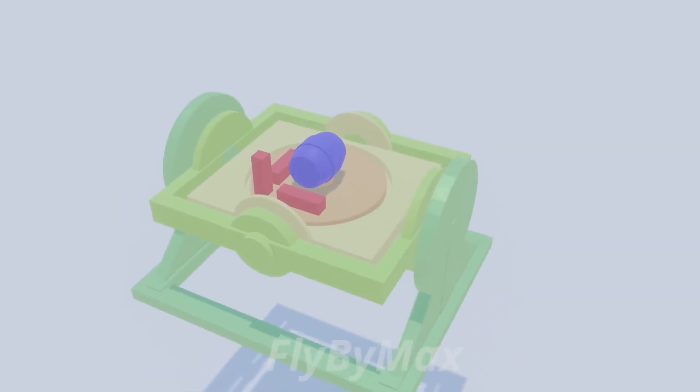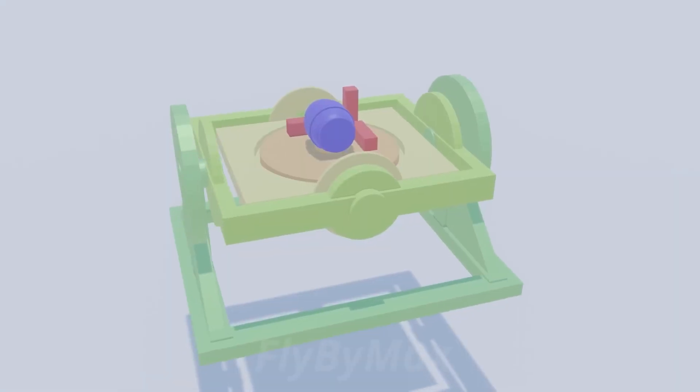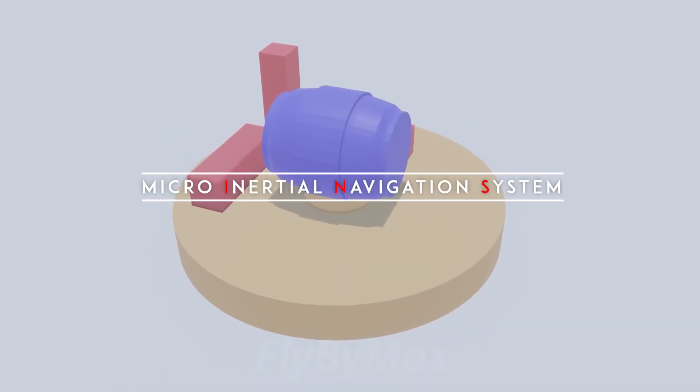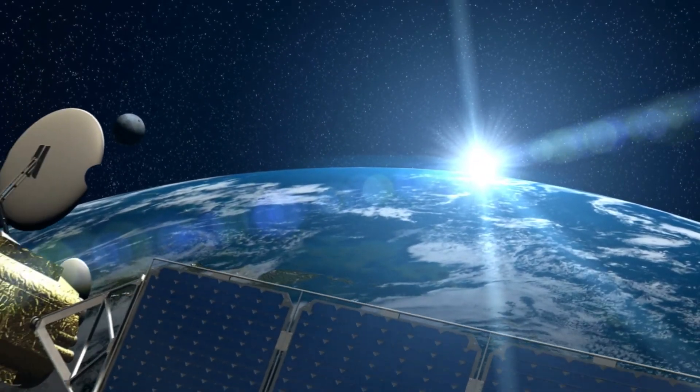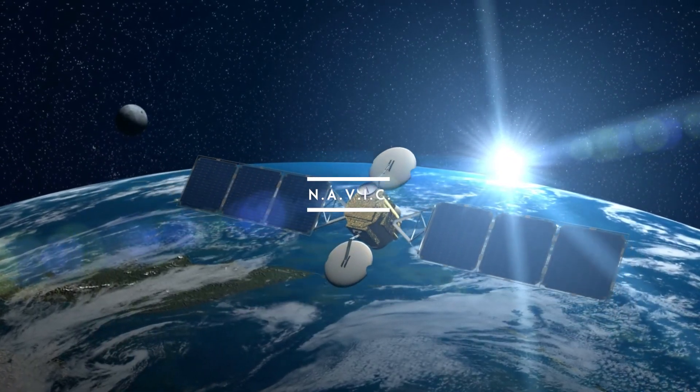To further fortify the resilience of Agni 5's navigation system, and ensure mission success even in the face of primary guidance system failure or degradation, a backup system known as the micro-inertial navigation system has been integrated. Moreover, unlike Iran, India operates its own GPS satellite system known as NAVIC.